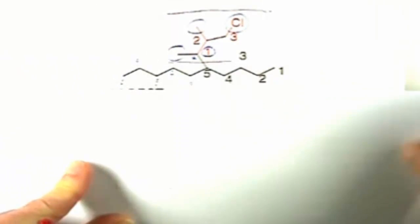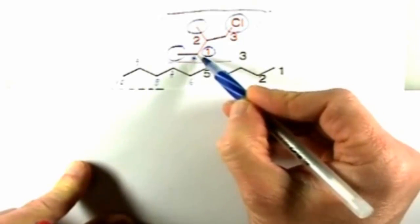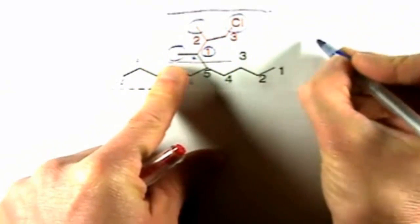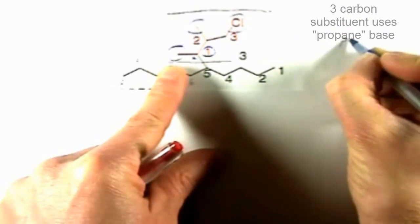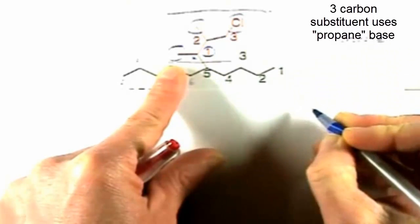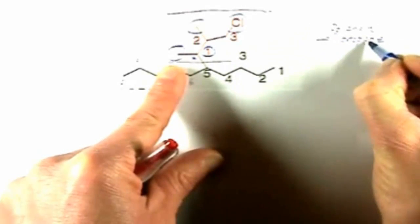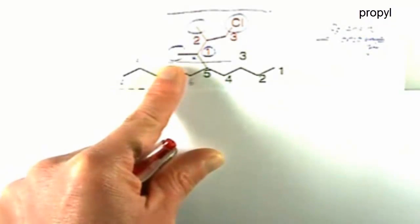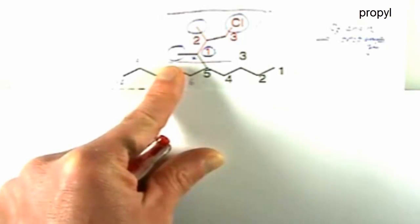And then that group, which is this entire thing in the red, in this red shape, you're going to have to designate that that's attached at carbon five to the main chain, but then you're going to have to say what this group is, which is a group that is based on propane, because there's a three carbon chain, you're going to drop off A-N-E and replace that with Y-L.